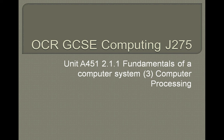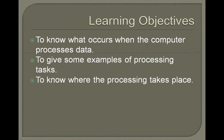OCR GCSE Computing, J275, Unit A451, 2.1.1, Fundamentals of a Computer System, Computer Processing. GCSE Revision here, bringing you another video of the GCSE Computing Course. This time we're looking at Part 3 of Part A of the Fundamentals of a Computer System, which is to define a computer system. Today's revision topic is on Computer Processing. Learning Objectives: to know what occurs when the computer processes data, to give some examples of processing tasks, and to know where the processing task takes place.